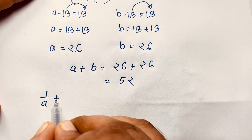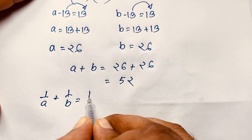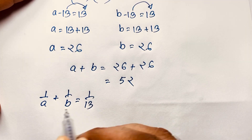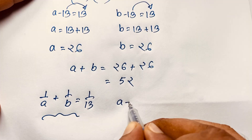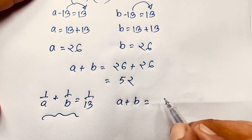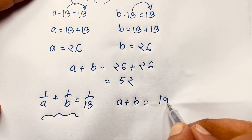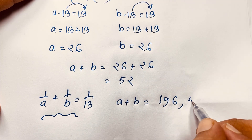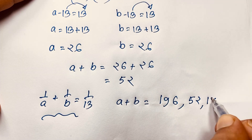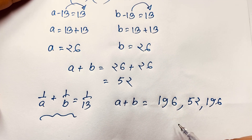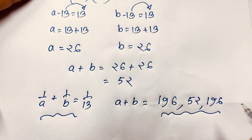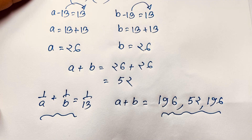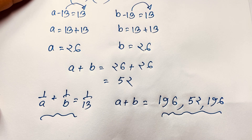So for the question 1 over a plus 1 over b equals 1 over 13, the possible values of a plus b are 196 and 52. These are our final solutions to this algebraic math olympiad question. Thank you all — if you enjoyed this, please subscribe to my channel for more interesting videos. Goodbye, take care.